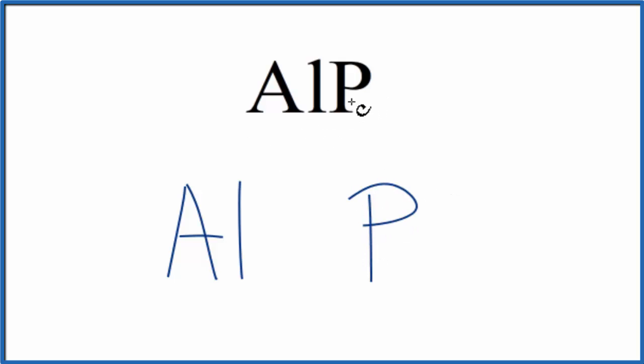Aluminum is a metal, phosphorus is a nonmetal. So we're going to treat this as an ionic compound and the electrons will be transferred from the aluminum to the phosphorus, the metal to the nonmetal.